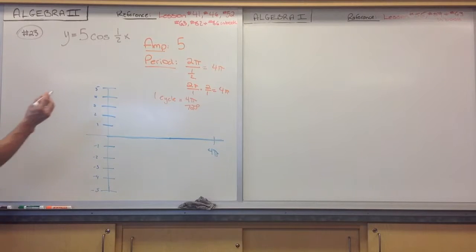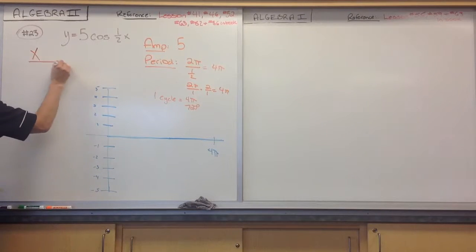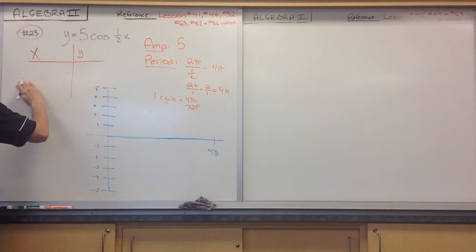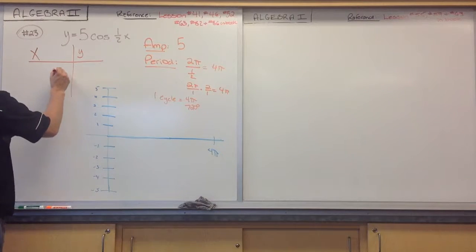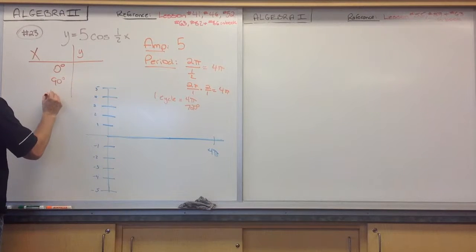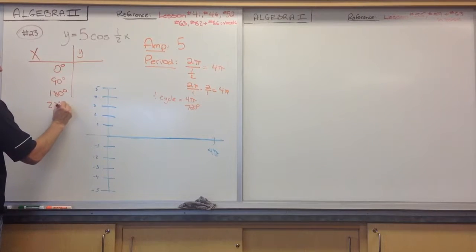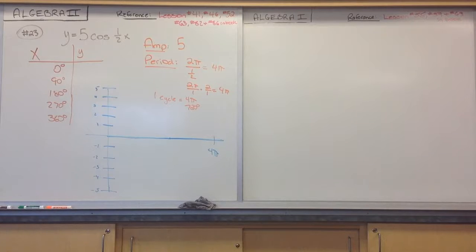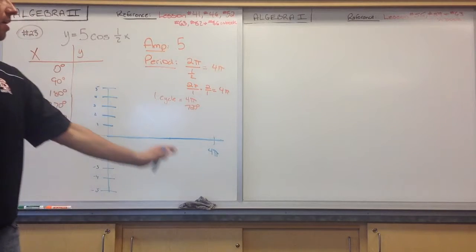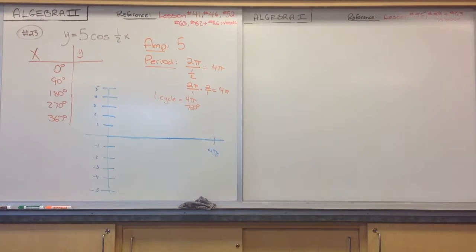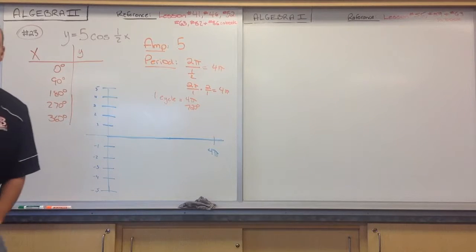Now we've got to create our chart so we can get the specifics. We plug in x values: 0, 90 degrees, 180, 270, and 360 — always plug those in. We could also use radians: 0, pi over 2, pi, 3 pi over 2, and 2 pi. It's still going to be the same thing.